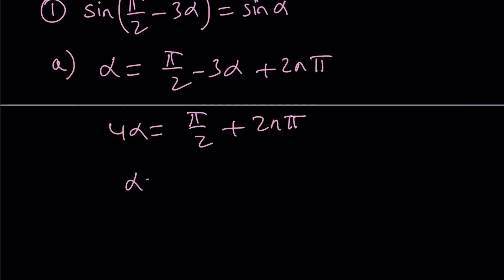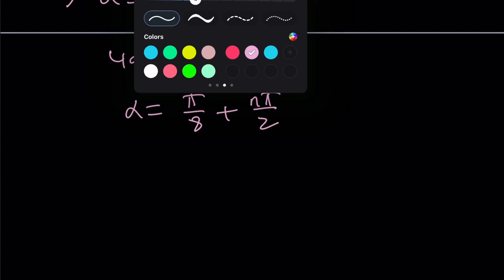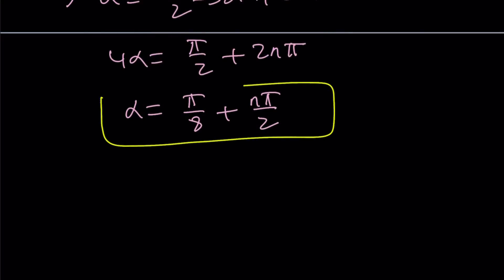I'm going to divide both sides by 4 and that's going to give me pi over 8 plus n pi over 2. And obviously, pi over 8 is the smallest angle that satisfies this equation. But, it's basically the general solution is this one. Okay.